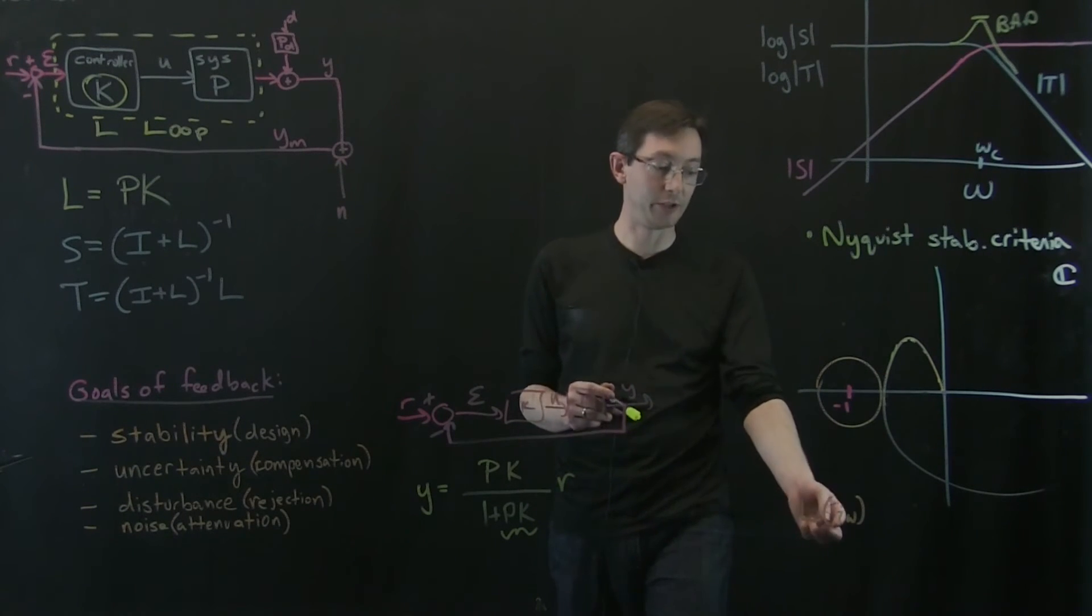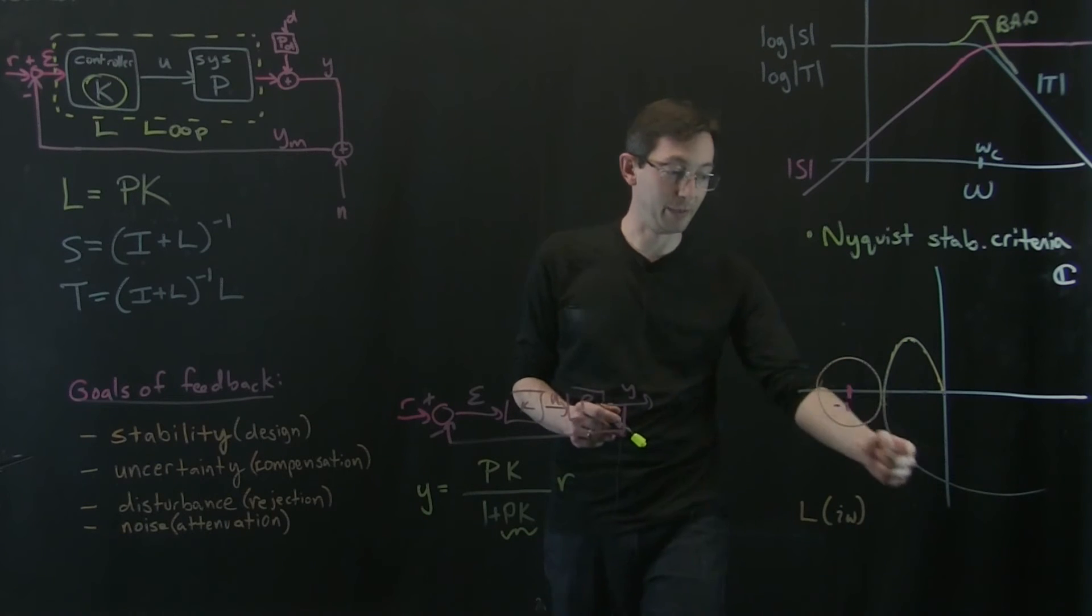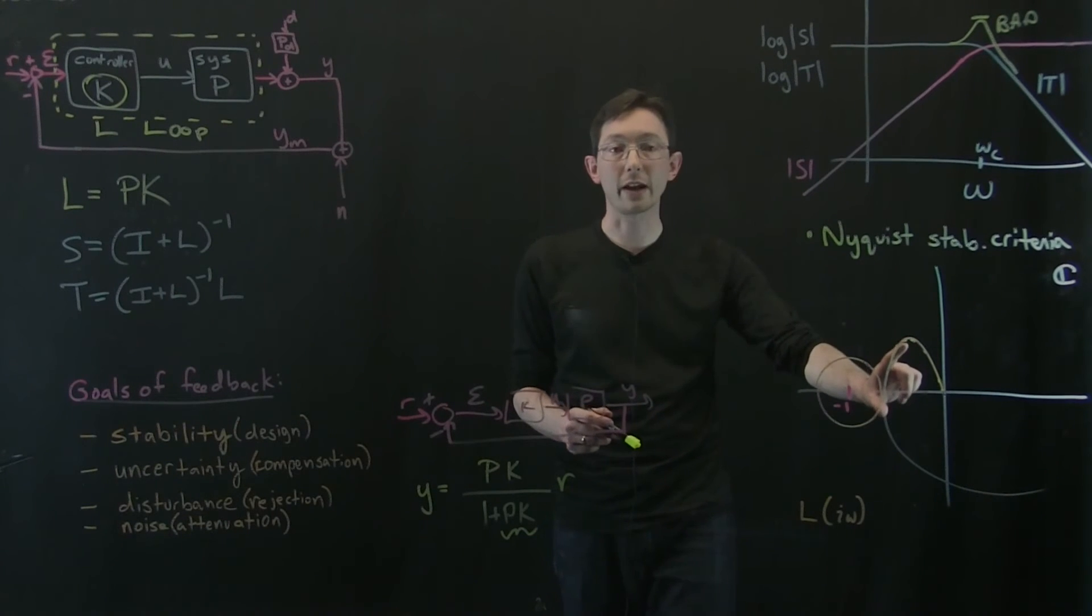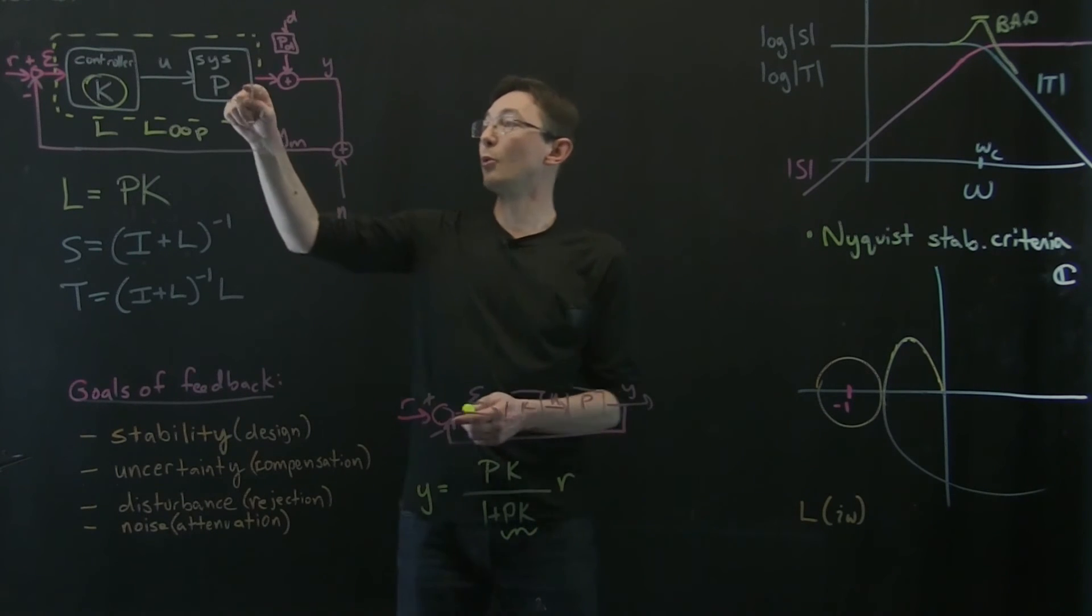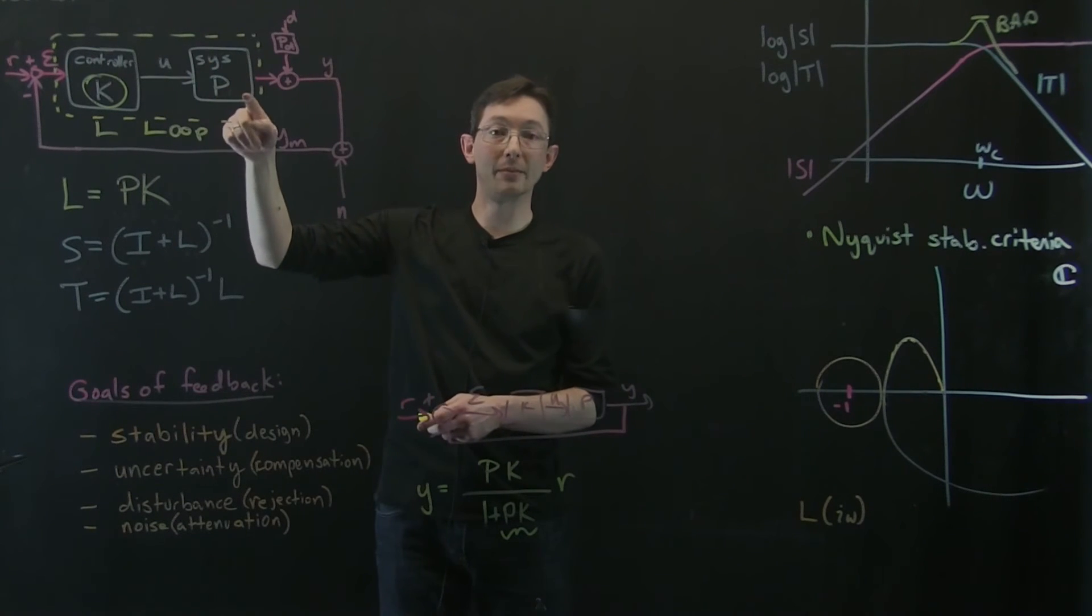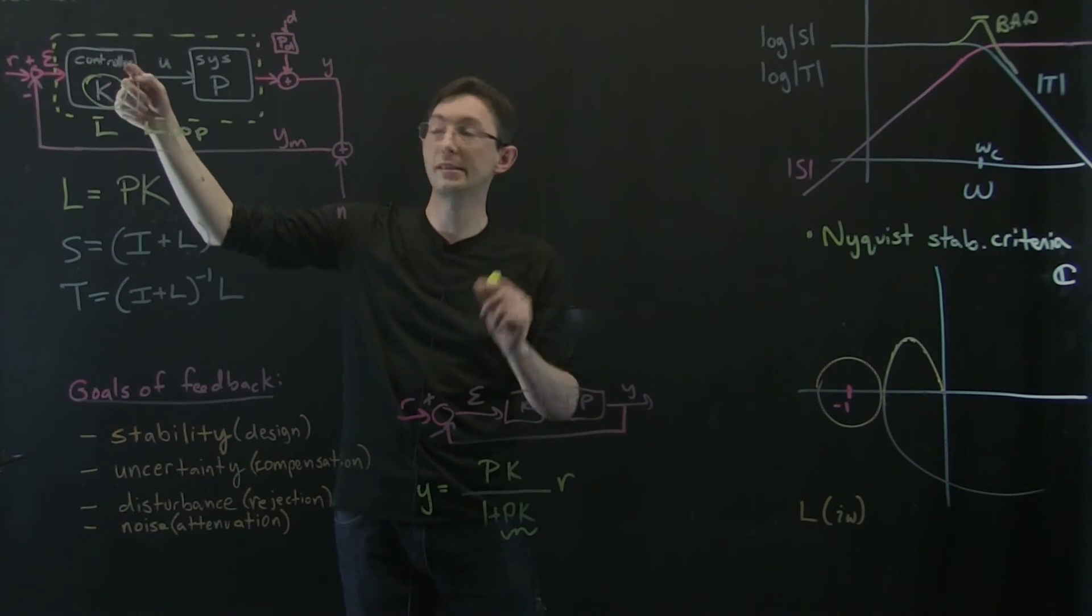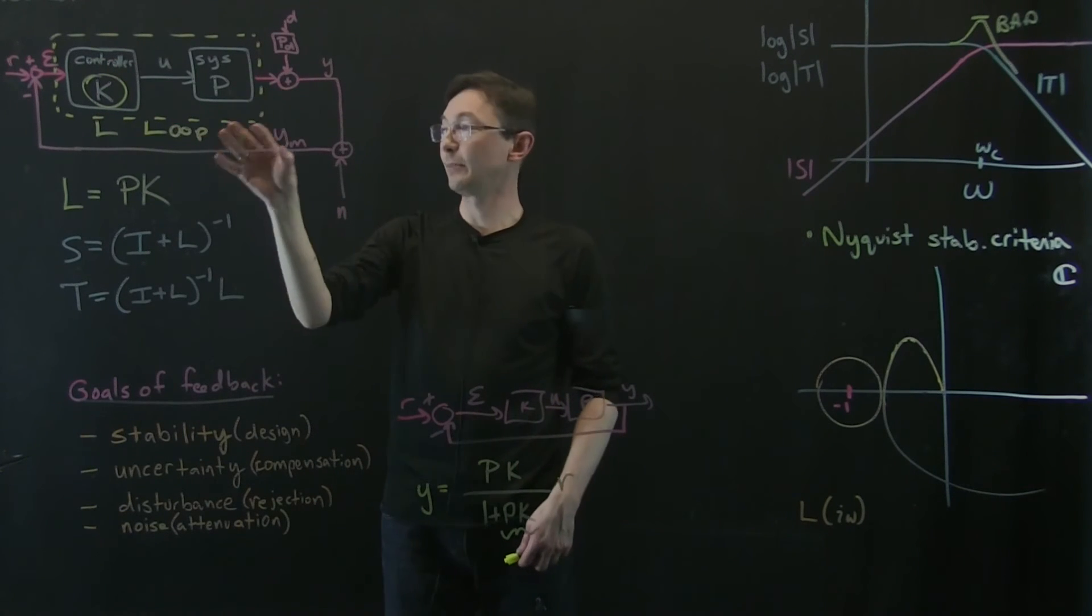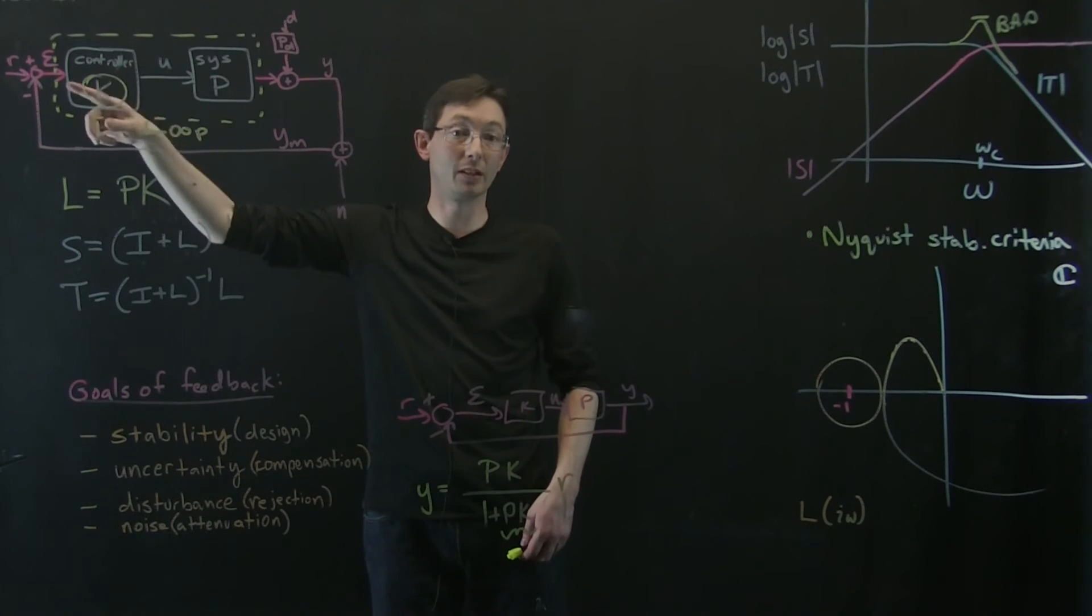But the takeaways are the farther my loop transfer function is from the negative one point in the complex plane. Remember, if I take my loop transfer function and evaluate it at i omega for all frequencies on the imaginary axis, I sweep out this curve. The farther that curve is from negative one, the more robust my system is. The more I can handle unmodeled dynamics in P, the more I can increase my gain K to get more performance, the more time delays.